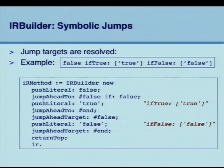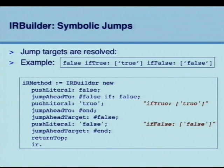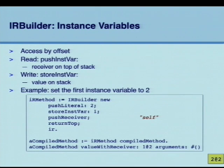The IR builder: push literal false, jump ahead to false, push literal true, jump ahead to end, then target false — do the false branch — then return top. When we do changes at this IR level, we have an intermediate level where we can adapt jumps and temps without dealing with raw bytecode positions.